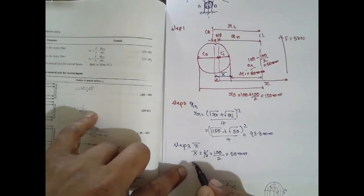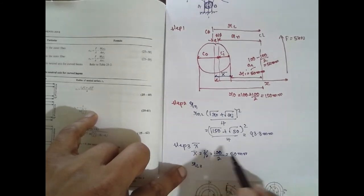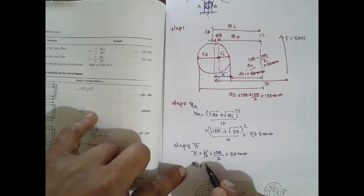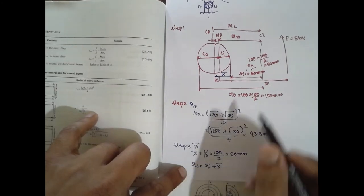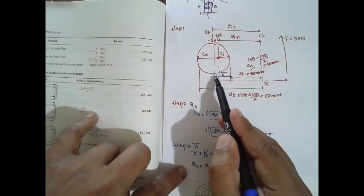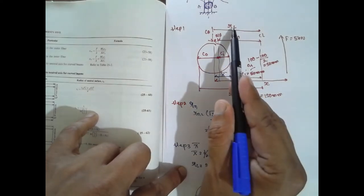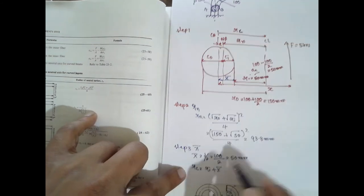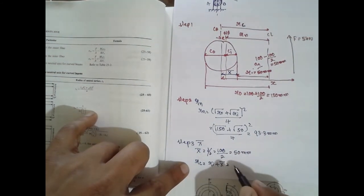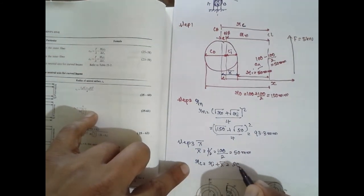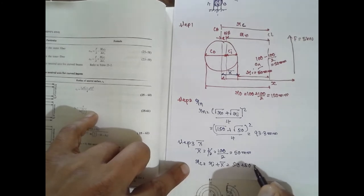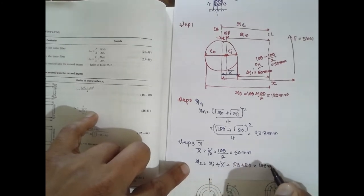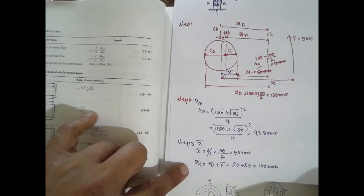Next, you can get rc. rc is nothing but ri plus x bar from the video. ri plus x bar will get the rc. This is rc. ri is 50, x bar is 50. The answer will be 100 mm.